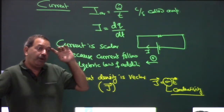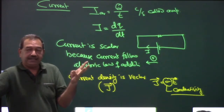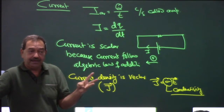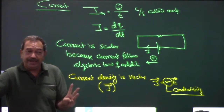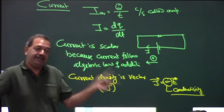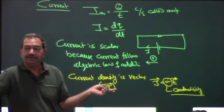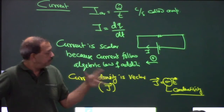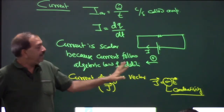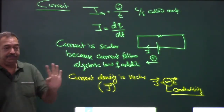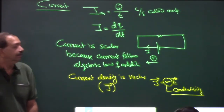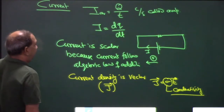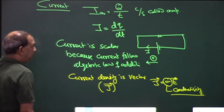Current itself is not a vector quantity, but current per unit area — current density — becomes a vector quantity. Current is scalar, area is scalar, but current density (current per unit area) is a vector. This is a mathematically involved concept, so just remember it.